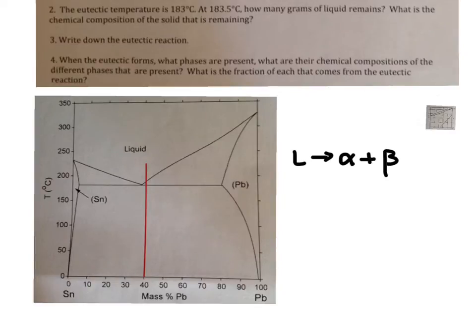Then what? When the eutectic reaction forms, when the eutectic forms, that means this is essentially the eutectic structure. When that forms, what phases are present?